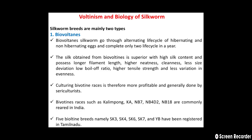Bi-voltine silkworms go through an alternating life cycle of hibernating and non-hibernating eggs and complete only two life cycles in a year. The silk obtained from bi-voltines is superior, with high silk content, longer filament length, higher neatness, cleanliness, less size deviation, low boil-off ratio, high tensile strength, and less variation in the units.